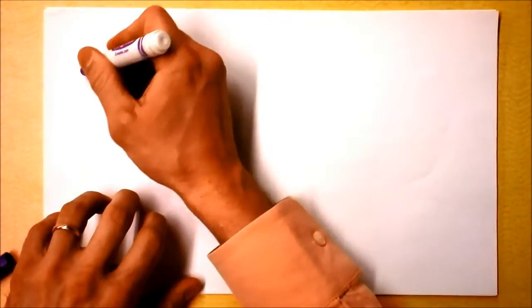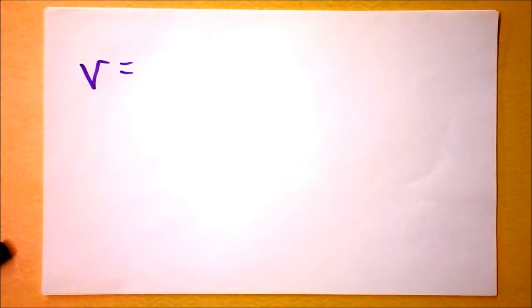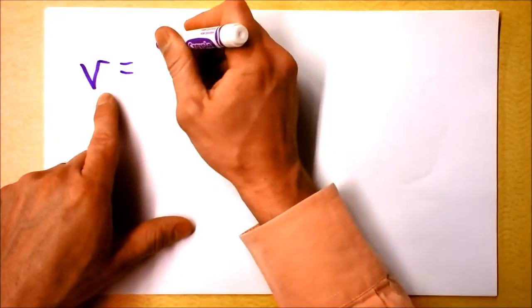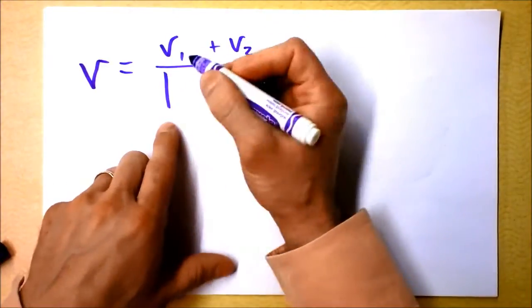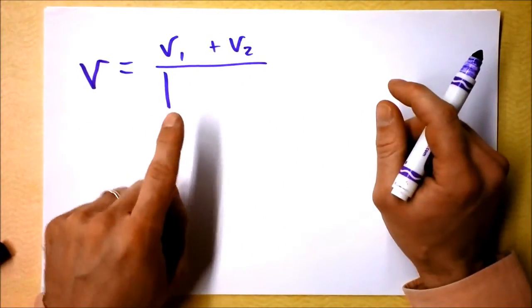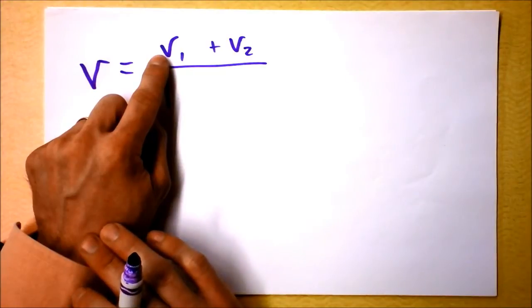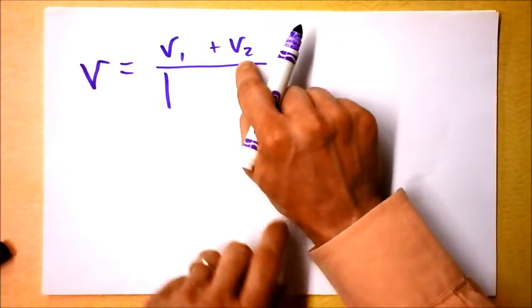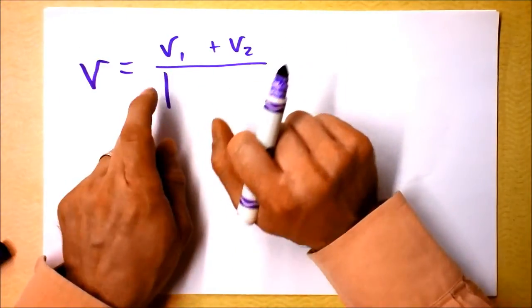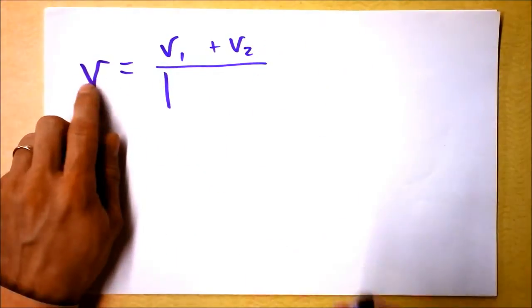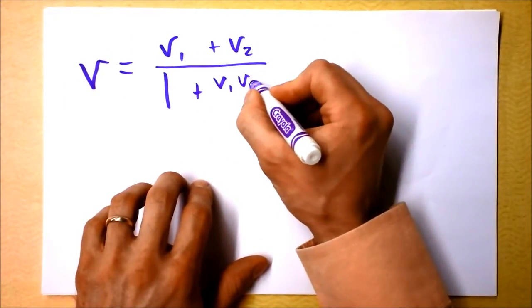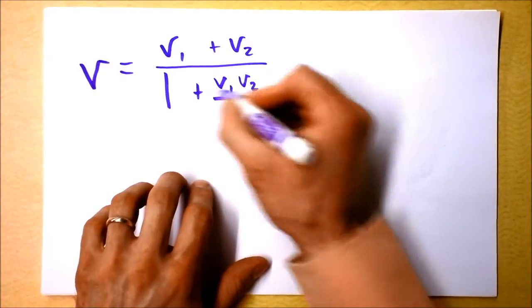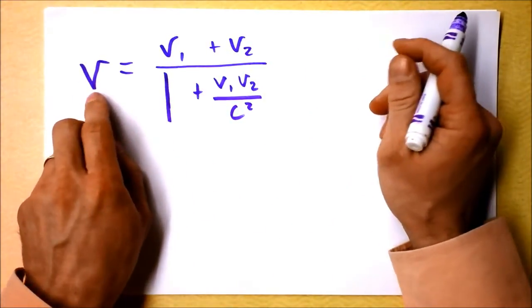When I was a boy, my mother sat me down on her knee and she said, 'Son, one and one is not two, especially when you're working with relativistic velocities.' If you've got two things looking at each other, and one thing sees another going at a certain speed, and the second thing sees a third thing going at a different speed, then to find out how the first thing sees the third thing, you use this equation right here. This is relativistic velocity addition, and it guarantees the velocity of the third thing is less than the speed of light.